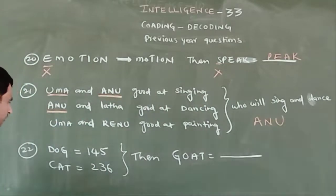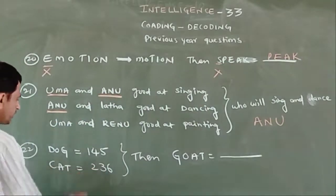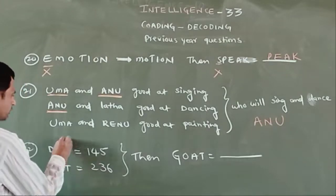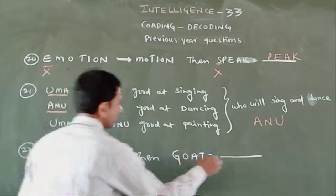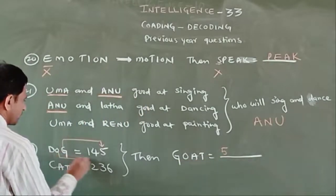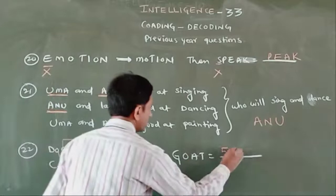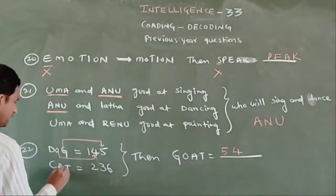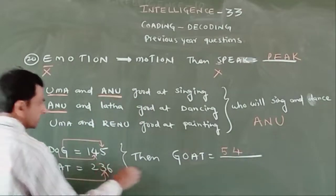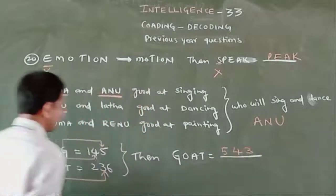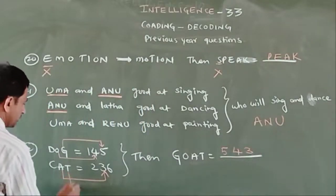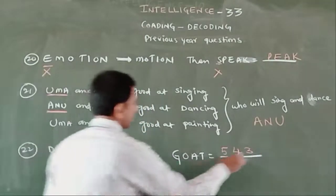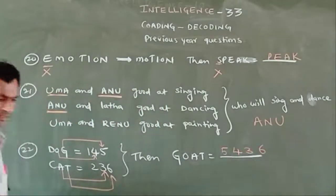DOG equals 145, CAT equals 236. Then GOAT: G is 5, O is 4, A is 3, T is 6. So 5, 4, 3, 6 is the answer.